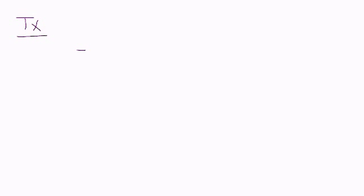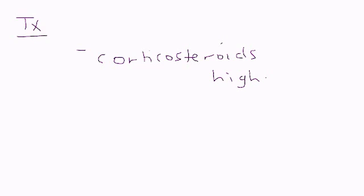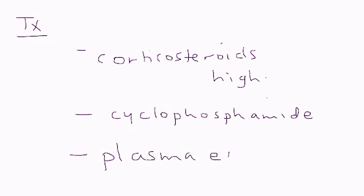So how do you treat? Glomerular inflammation is really the hallmark of this disease, so that is treated with corticosteroids. In particular, if it's adults, it's usually high dose because adults tend to have a worse outcome. Another drug that's used is cyclophosphamide. Another method of treating this is plasma exchange, which means replacing the patient's plasma with new plasma. This is believed to be effective because it removes those antibodies from the person's bloodstream — the antibodies that are attacking the glomerulus.